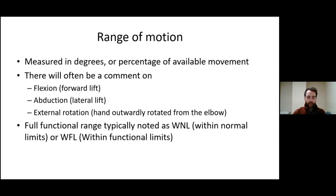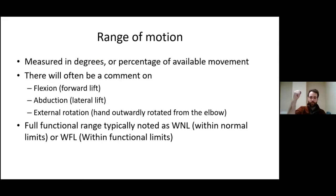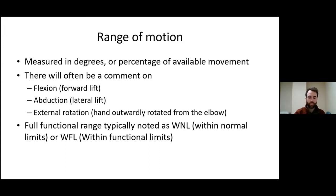Range of motion is often measured in degrees. We'll commonly comment on flexion (the forward lift), abduction (out to the side), or external rotation (hand rotated outward from the elbow). When a patient has good range, we note this as within normal limits or within functional limits — meaning we'd expect their shoulder to be in a state comparable to their other shoulder.